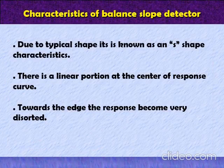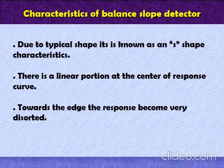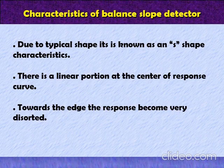Let's see the characteristics of the balance slope detector. Due to the typical shape, it is known as an S-shaped characteristics because its curve implies as an S-shape. There is a linear portion at the center of the response curve and towards the edge, the response becomes very distorted.